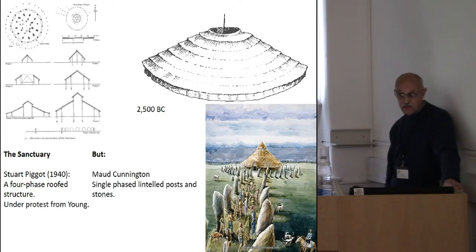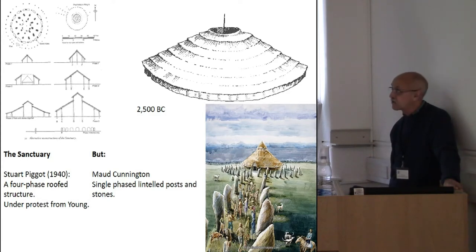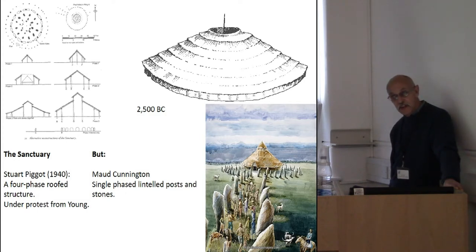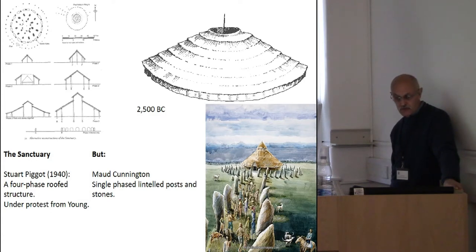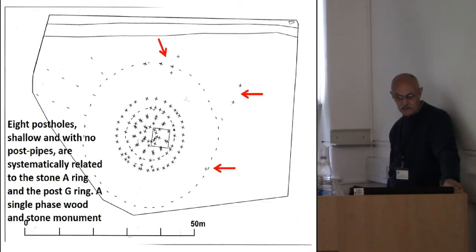However, it must be pointed out that Piggott's talk in 1940 was under protest from the chief excavator, Young, and that Maud Cunnington never thought this. Maud Cunnington's view was that the sanctuary was a single-phase structure of lintel posts and stone. So wood and stone together was the view of the original excavator.